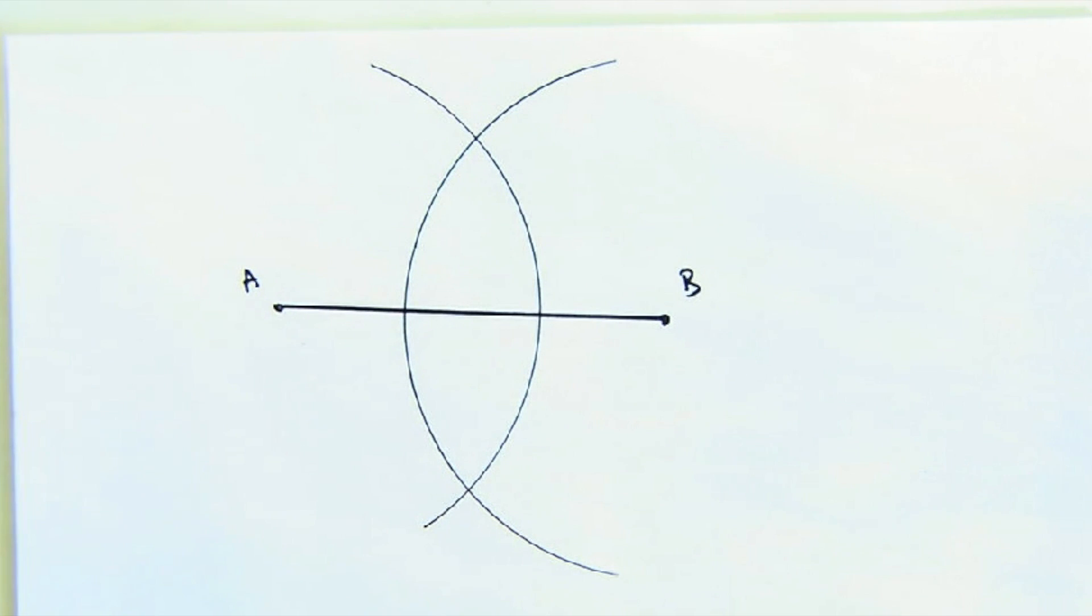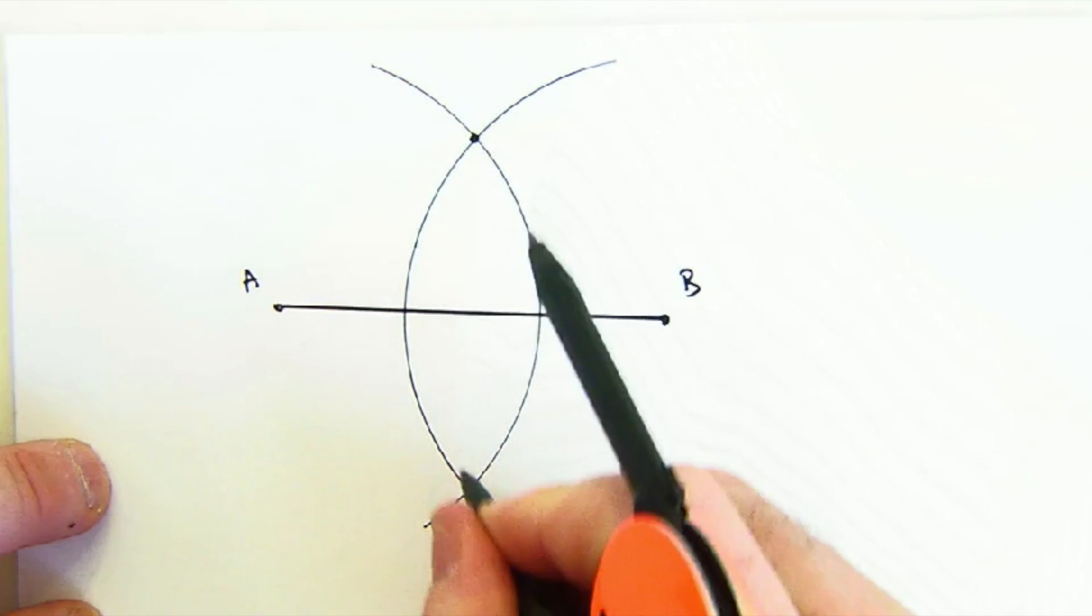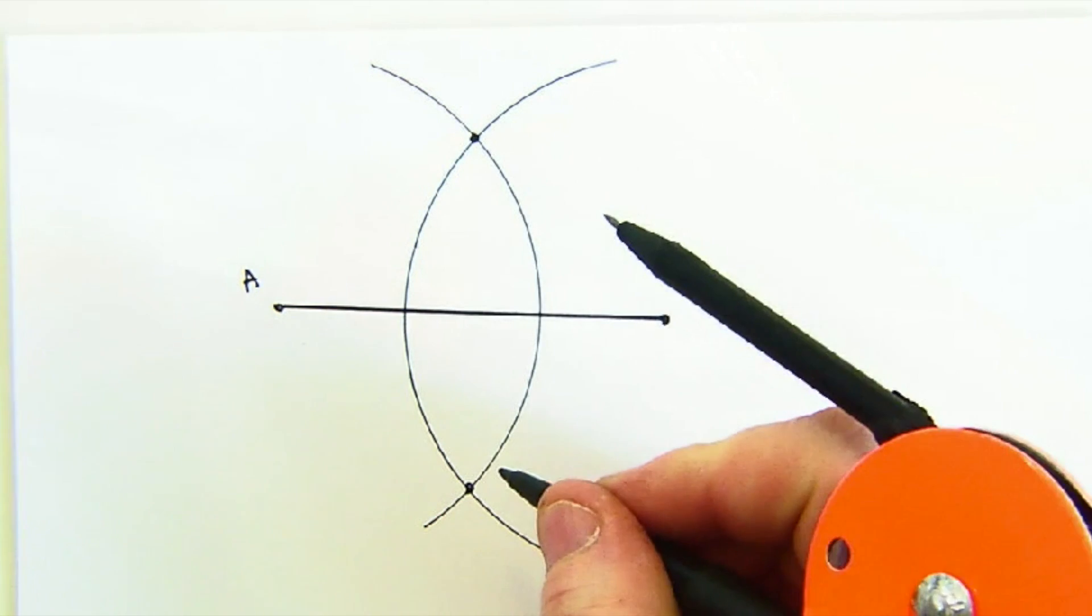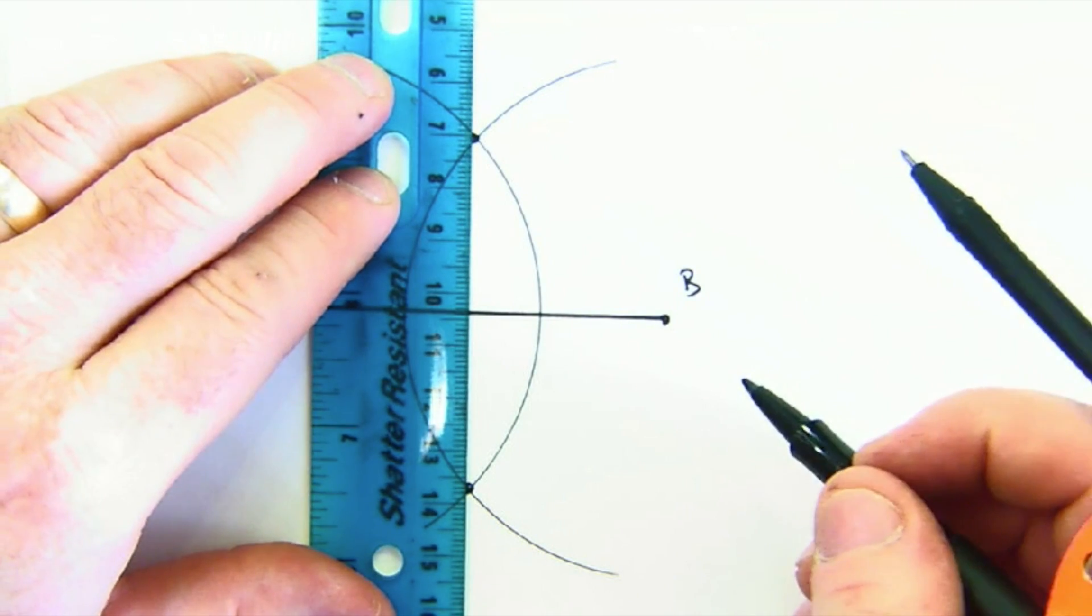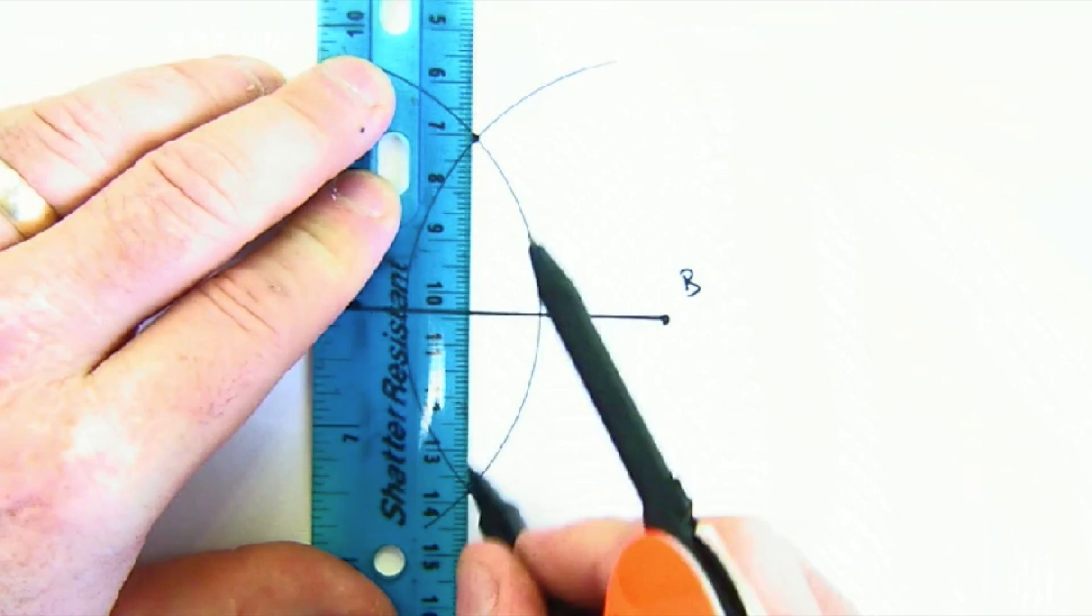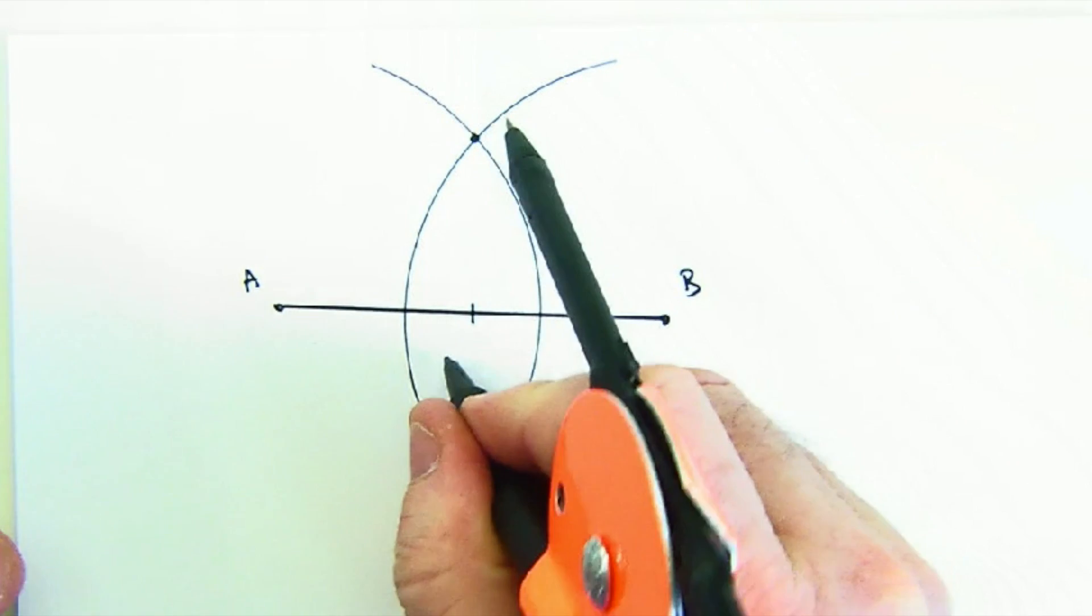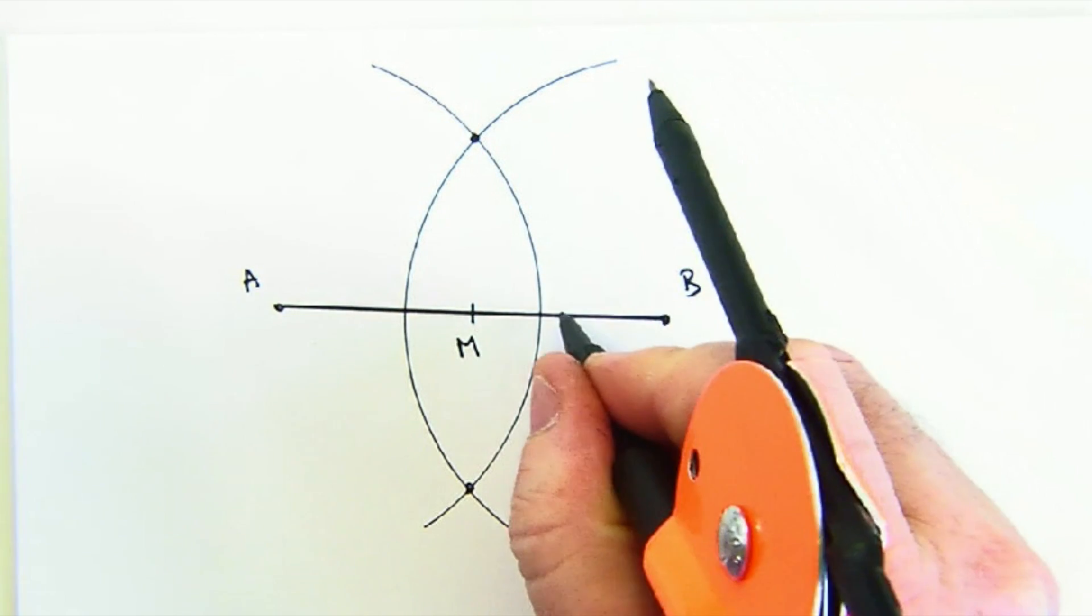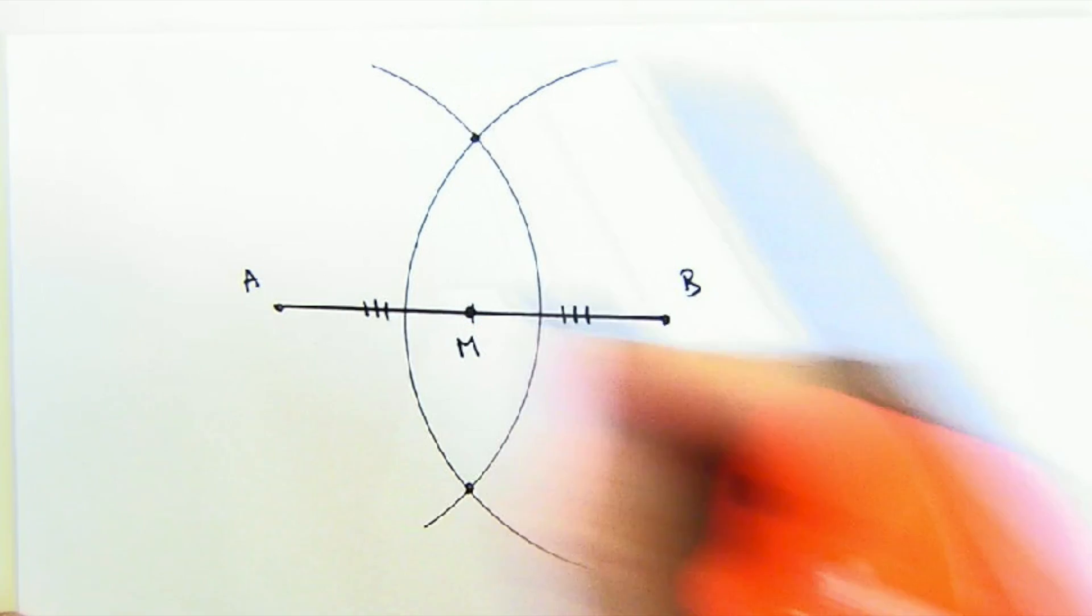Now what you've created is two circles. They intersect at two locations, here and here. And if you lay your straight edge between those two intersections, where that line intersects segment AB is the exact middle of our segment. So here's our point M, the midpoint of AB.